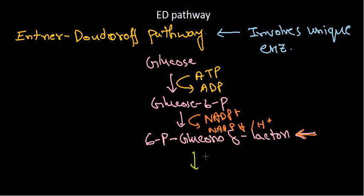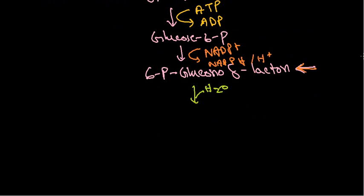So, after this production of 6-phosphoglucono-delta-lactone, water is required. After the water addition, they convert the 6-phosphoglucono-lactone into 6-phosphogluconate.